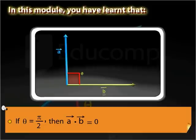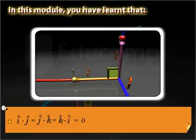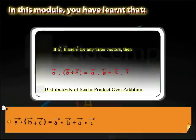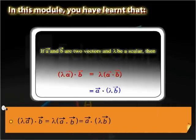The dot product of two vectors is equal to 0 when theta is equal to pi by 2. The dot product of unit vectors I cap dot J cap, J cap dot K cap, and K cap dot I cap is equal to 0. The dot product of two vectors is the negative of the product of their magnitudes when the angle between them is equal to pi. The dot product of vector A with the sum of vectors B and C is equal to the dot product of vectors A and B plus the dot product of vectors A and C. The dot product of lambda times vector A with vector B equals lambda times the dot product of vectors A and B, which further equals the dot product of vector A and lambda times vector B.